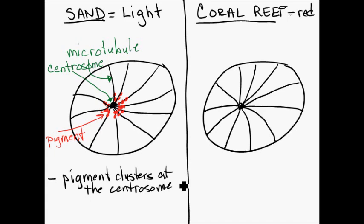And secondly, if you say, well, what of the two motors—the plus end directed motor, which is kinesin, or the minus end directed motor, which is dynein—which one should be active? It's the dynein, not the kinesin. So the dynein is the active motor, and that causes the pigment to be clustered towards the centrosome.